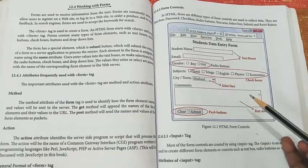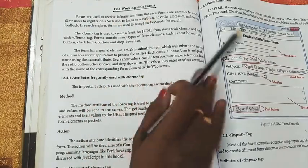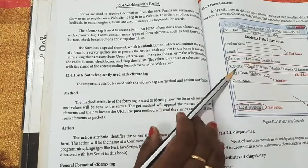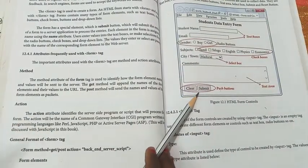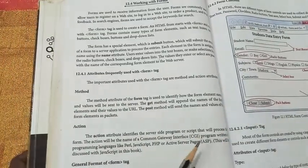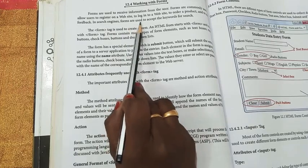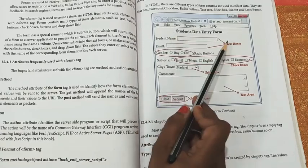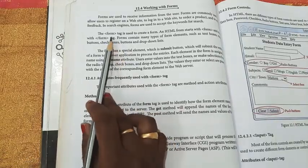Forms are used to receive information from the user. They are commonly used to allow the user to register particular information on the web — for example, general data about students. After completing the form you give a submit command button, and the data is automatically registered on the website. Forms are also used in feedback and for search engines to accept keywords. For example, if you type 'student data entry form' in a web browser, it searches and produces that information on screen.